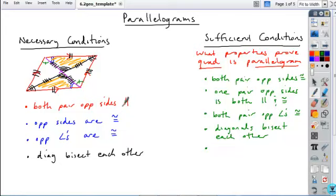One just based on the definition - a sufficient condition is always really what the definition is. So if both pairs of opposite sides are parallel to each other, that's enough to show that you have a parallelogram.